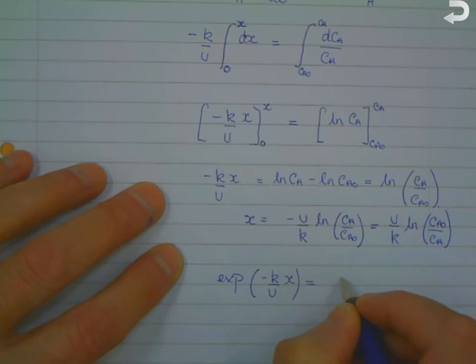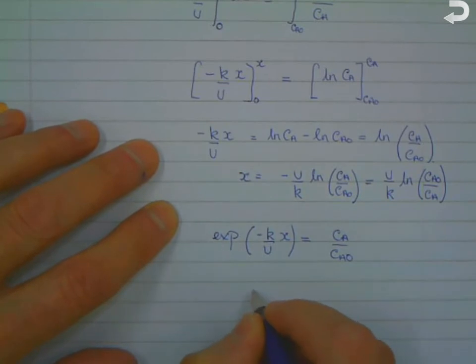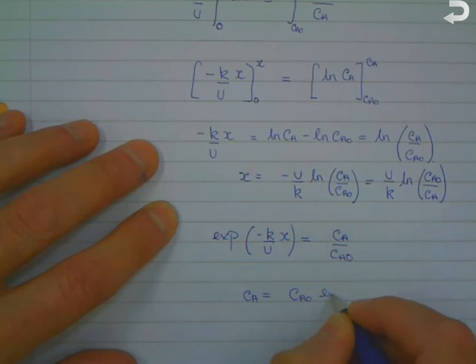Equals CA over CA0, and hence CA equals CA0 multiplied by the exponential of minus K over U times x.